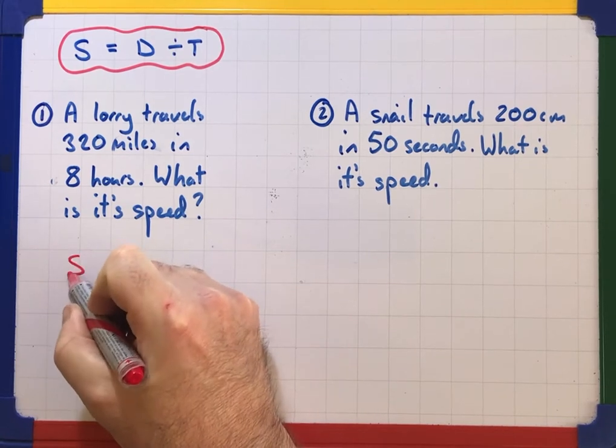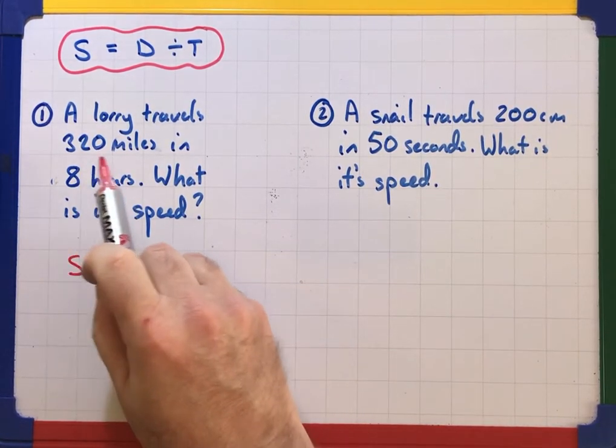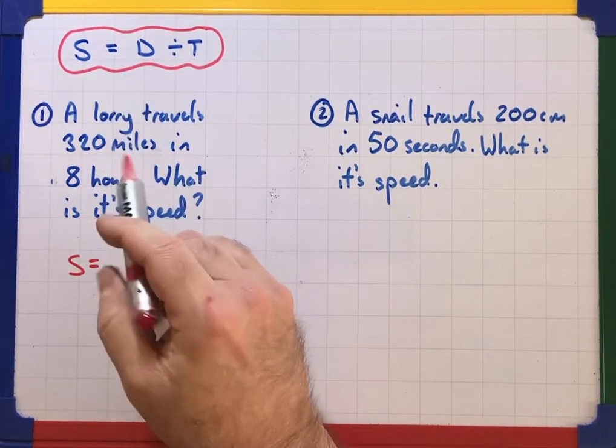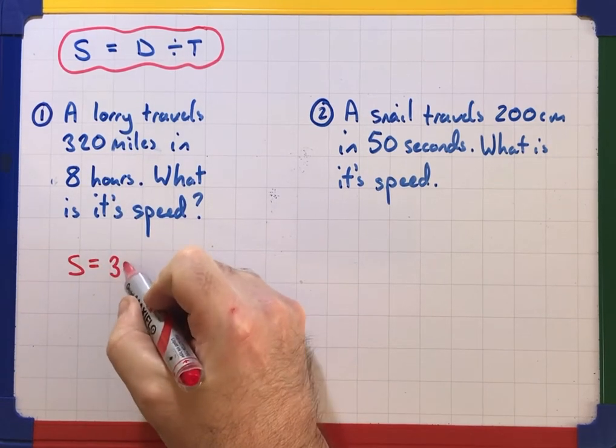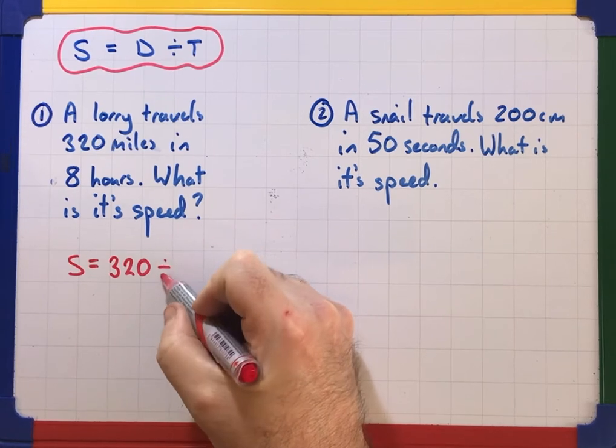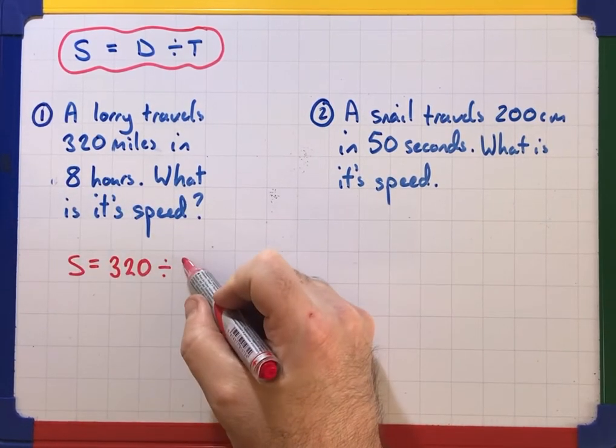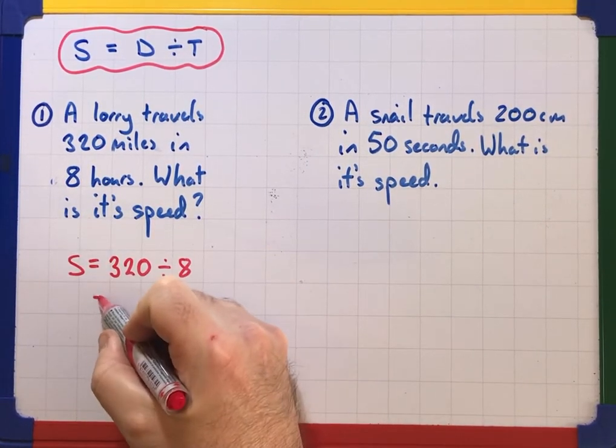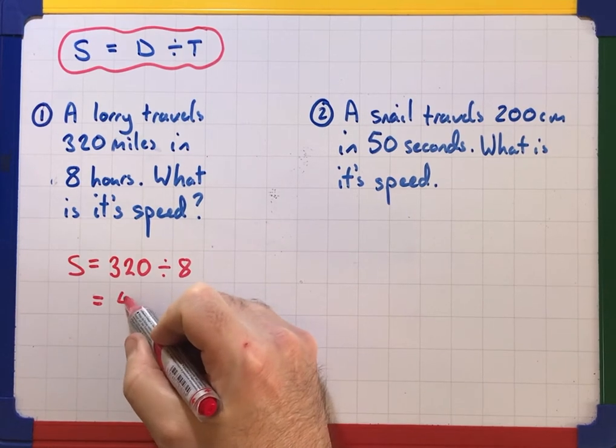So we write down its speed. Now 320 miles that's our distance so it's 320 divided by and our time is eight hours so divided by eight. If I work that out it gives me 40.